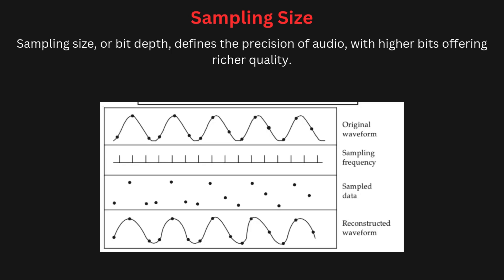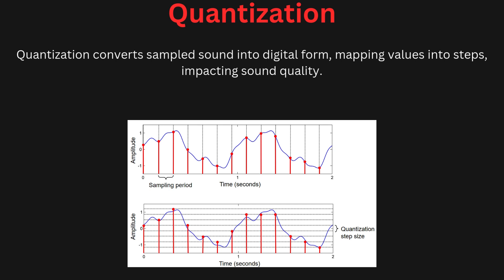The sampling size, also known as bit depth, refers to the number of bits used to represent each sample of audio. A higher sampling size provides more precise information about the sound, improving audio quality. For example, CD quality audio typically uses a 16-bit sample size, while professional audio may use 24-bit or higher. A larger bit depth allows for greater dynamic range, meaning the difference between the quietest and loudest parts of the sound is more accurately captured.